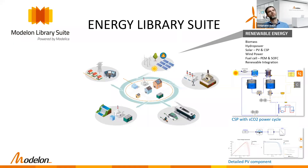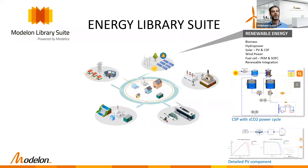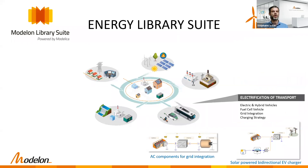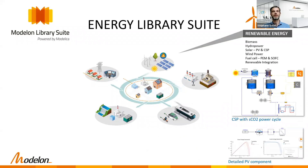On renewable energy systems: we have upgraded the concentrating solar power system model in the Thermal Power Library, making it flexible to change the power cycle. It originally included a Rankine steam cycle, but you can now simulate using a supercritical CO2 power cycle. We've also developed a new component for PV panels — a detailed model parameterizable using datasheet data.